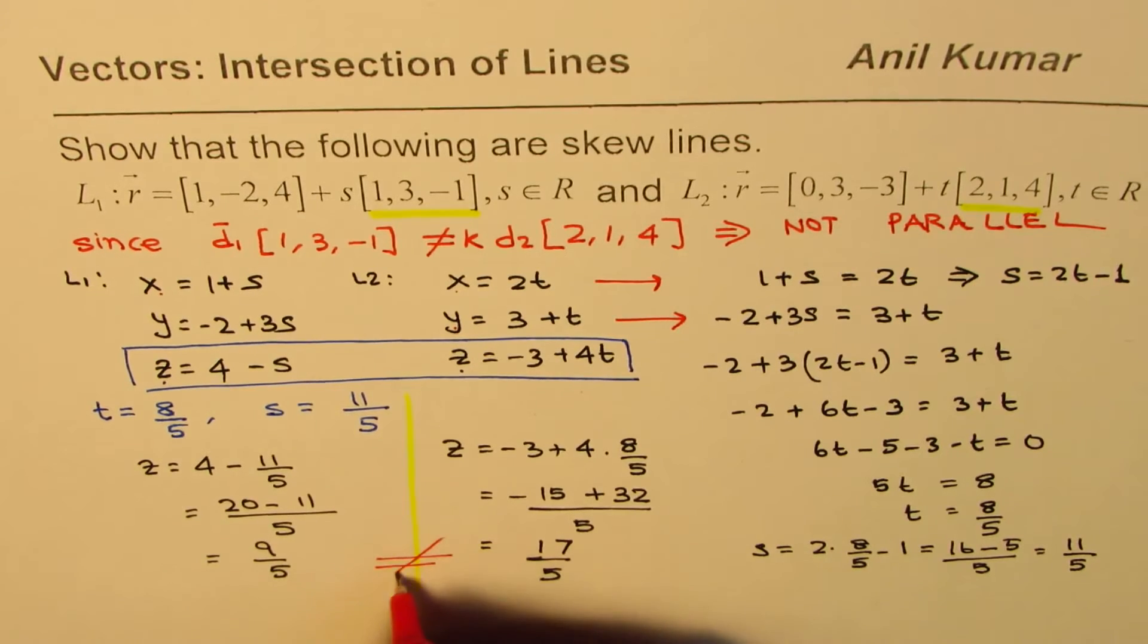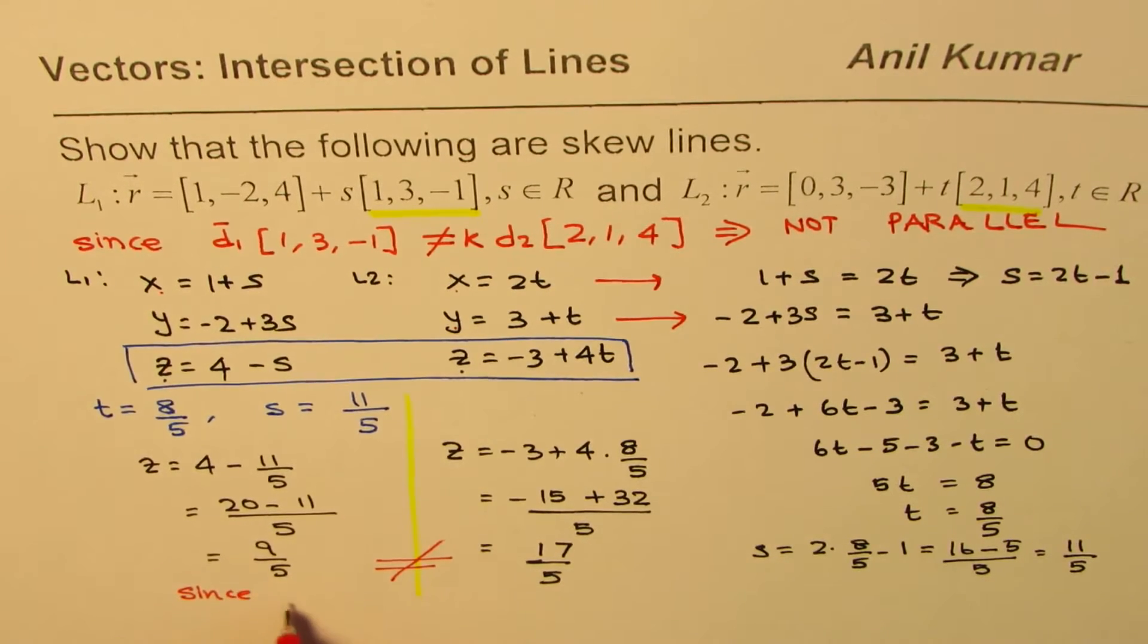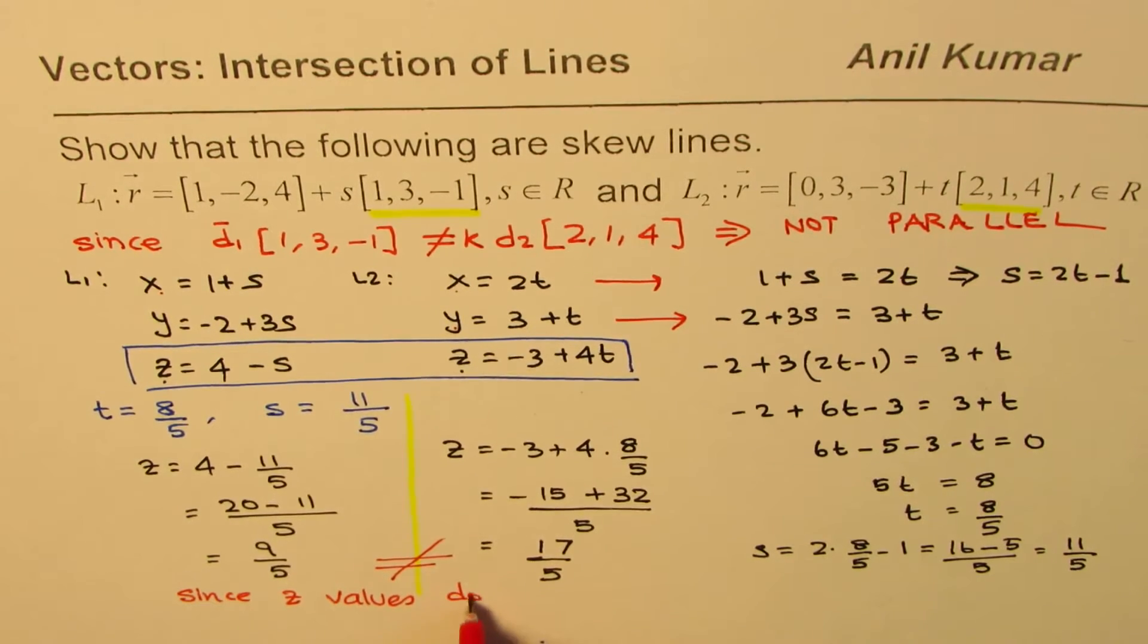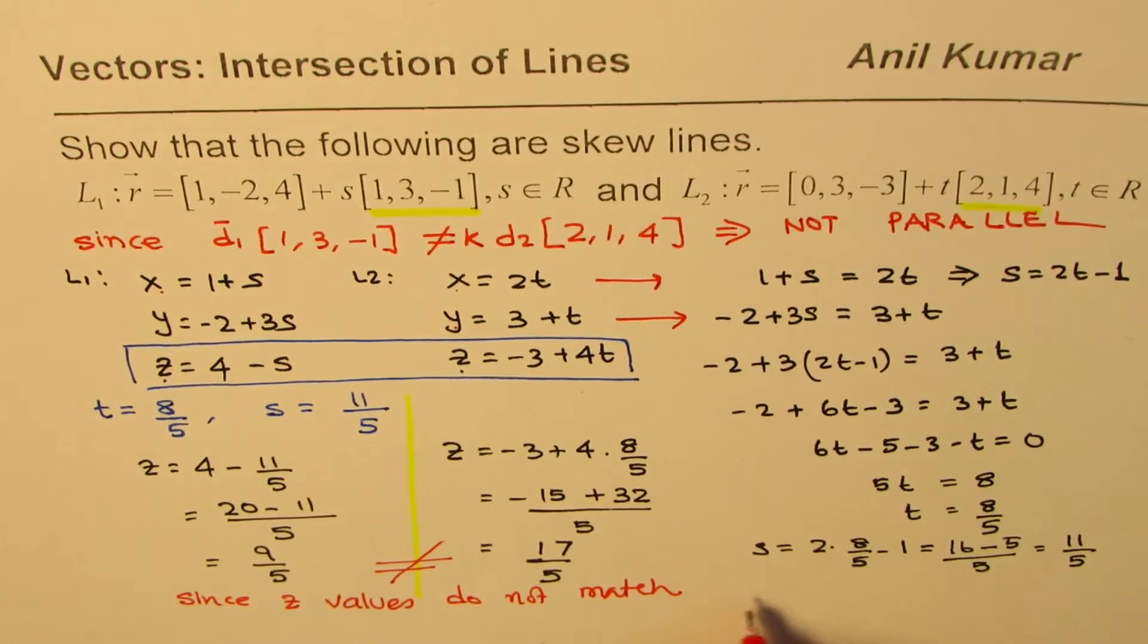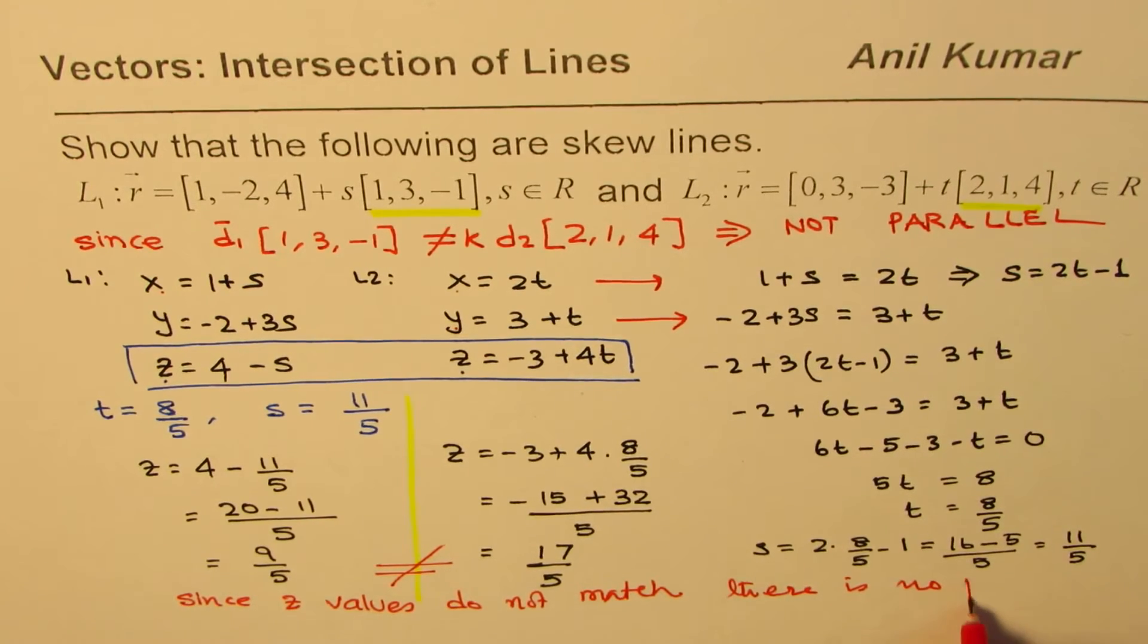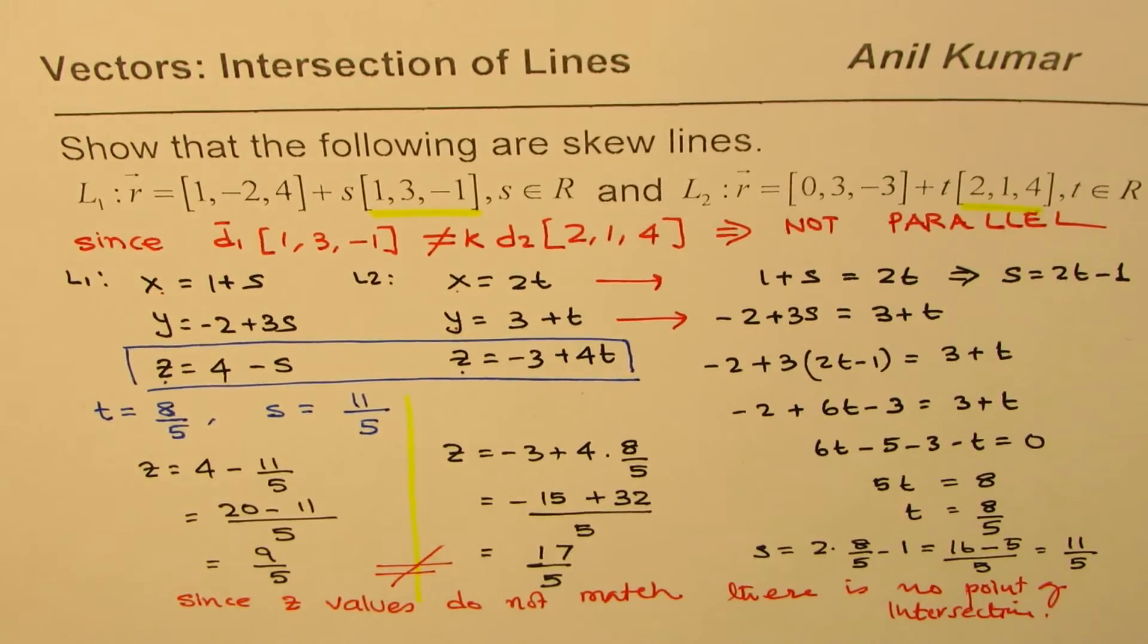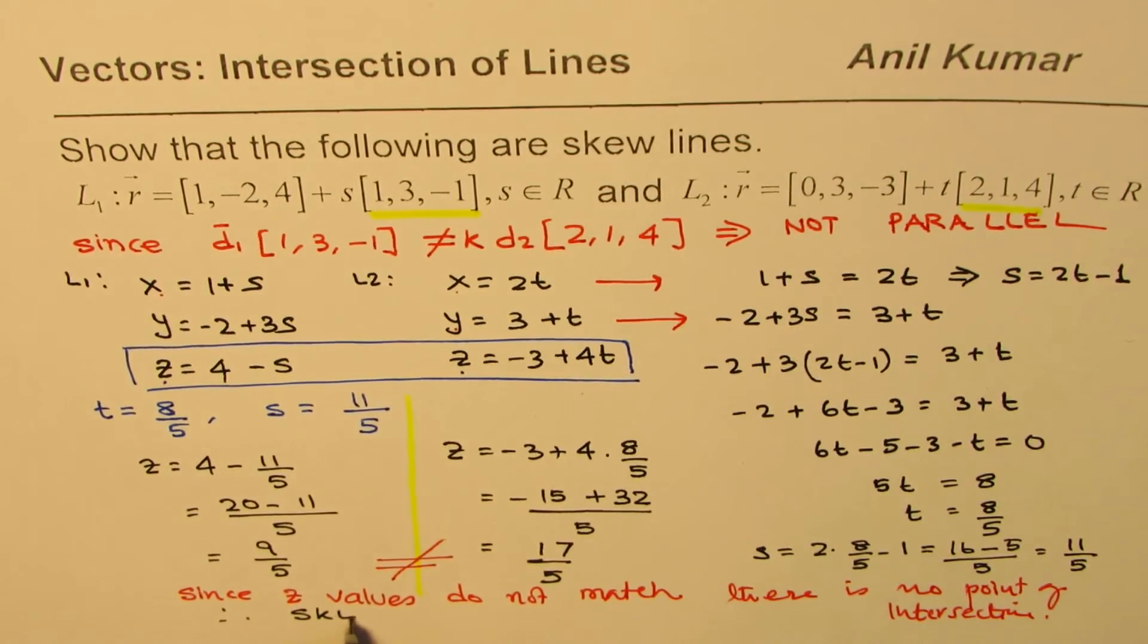They are not equal. Therefore, since z values do not match, there is no point of intersection. It really means that the lines are skew lines and therefore we have skew lines.